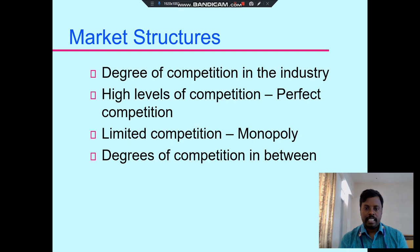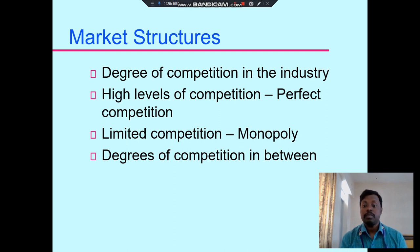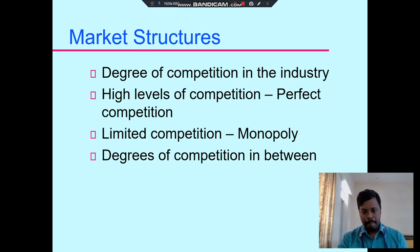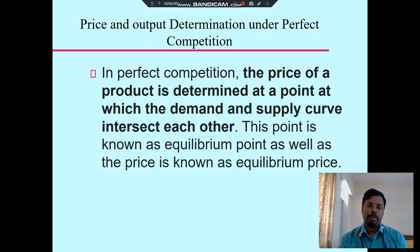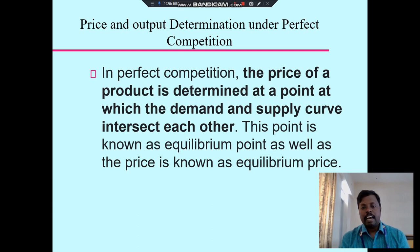There are several levels of competition in the industry: high-level competition in perfect competition, limited competition in monopoly, with oligopoly and monopolistic competition falling between these two extremes in terms of degrees of competition.